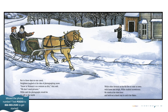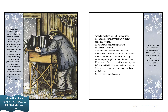But in those days, no one cared. Neighbors laughed at the idea of photographing snow. Snow in Vermont is as common as dirt, they said. We don't need pictures. Willie said the photographs would be his gift to the world. While other farmers sat by the fire or rode to town with horse and sleigh, Willie steadied snowstorms. He stood at the shed door and held out a black tray to catch the flakes. When he found only jumbled, broken crystals, he brushed the tray clean with a turkey feather and held it out again. He waited hours for just the right crystal and didn't notice the cold. If the shed were warm, the snow would melt. If he breathed on the black tray, the snow would melt. If he twitched a muscle as he held the snow crystal on the long wooden pick, the snowflake would break. He had to work fast or the snowflake would evaporate before he could slide it into place and take its picture. Some winters he was able to take only a few dozen good pictures. Some winters, he made hundreds.